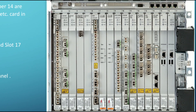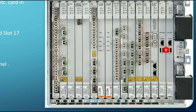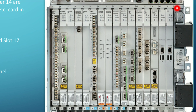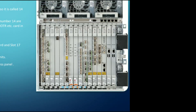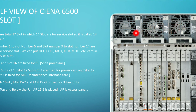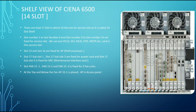Slot 15 and slot 16 are fixed for the shelf processor. Slot 17 is divided into three sub-slots: sub-slot 17-1 is fixed for a PAR card, and sub-slot 17-3 is fixed for the MIG maintenance interface card. On the top, slots 15-1, 15-2, and 15-3 are fixed for the fan card, and there is also an access panel which we will discuss at the end of this slide.